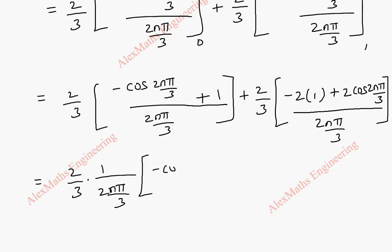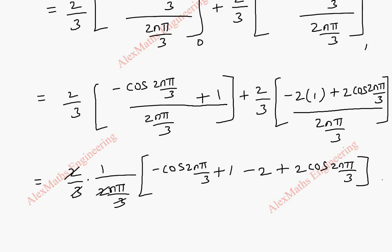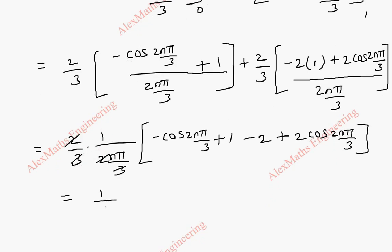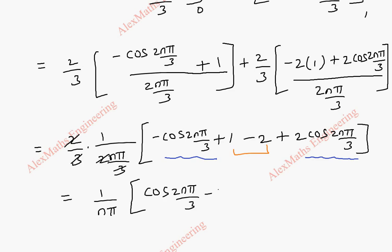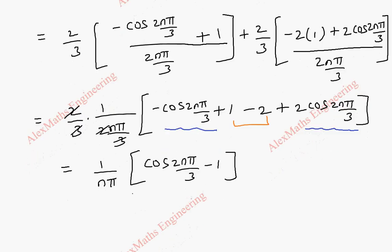Using the limits: the first term gives −cos(2nπ/3)/(2nπ/3) plus 1/(2nπ/3) (since cos(0) = 1). For the second part, the 3s cancel giving −2·cos(2nπ) = −2, plus 2·cos(2nπ/3). Taking 2/3 and 1/(2nπ/3) common, we have −cos(2nπ/3) + 1 − 2 + 2·cos(2nπ/3). The cos(2nπ/3) terms give +cos(2nπ/3), and 1 − 2 = −1. So the value of bn = (1/nπ)·(cos(2nπ/3) − 1).